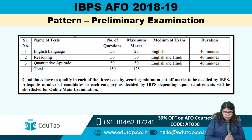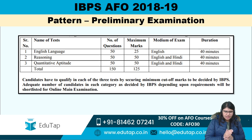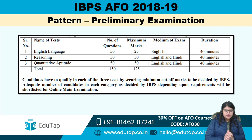One very important thing to note is that there are sectional timings. For English Language you'll get 40 minutes to solve, same goes for Reasoning and the same for Quantitative Aptitude. There is also a minimum cutoff for each section as well as an overall cutoff.